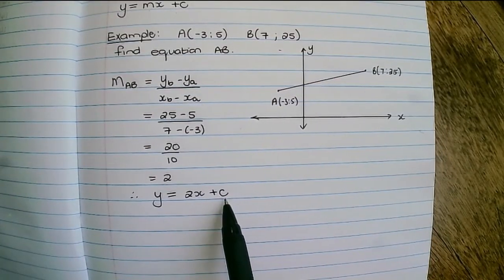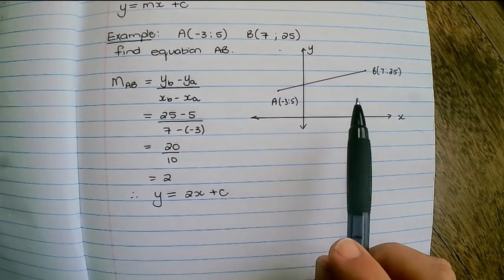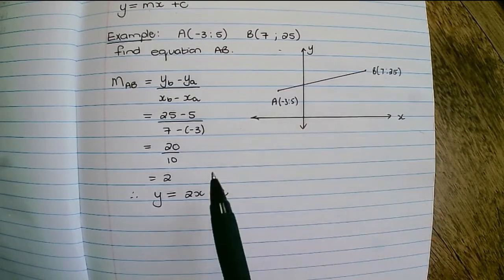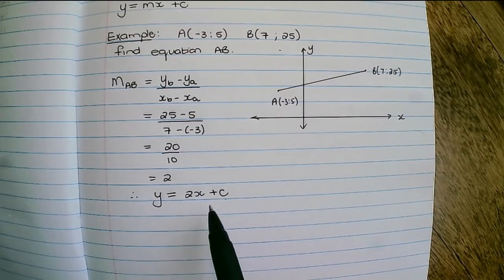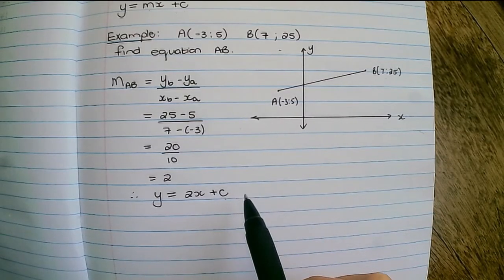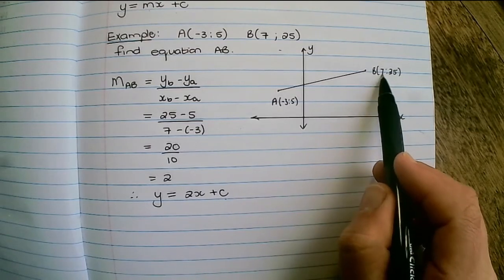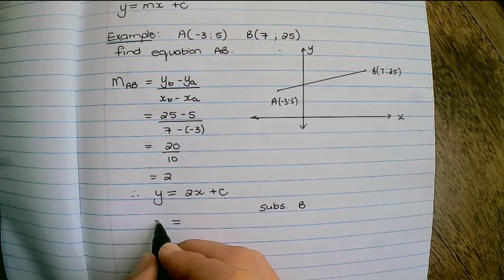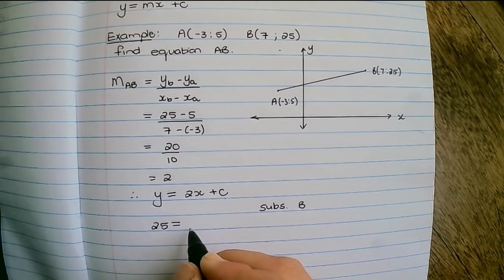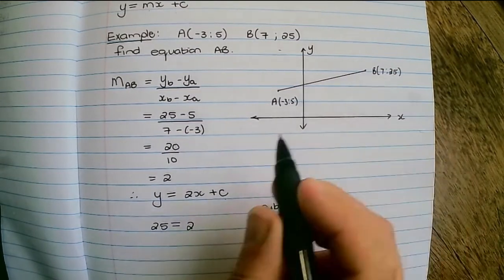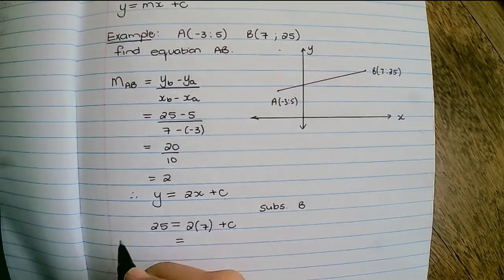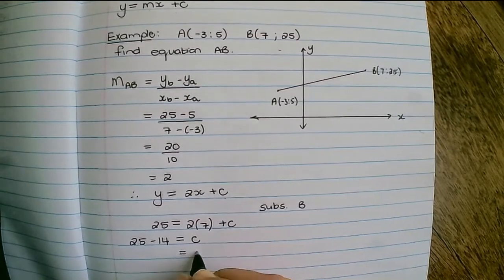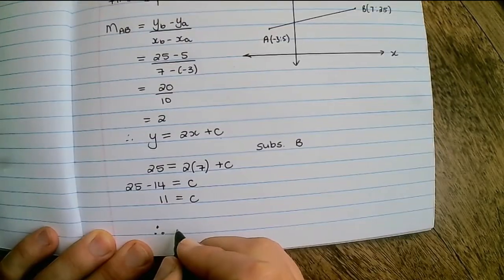Now in order to solve c the y-intercept we can substitute any one of these two points into the equation. I'm going to choose to substitute B. The y value of B is 25 so I replace y with 25, and the x value is 7. So that is 25 minus 14 equals the y-intercept.